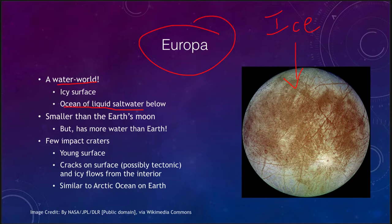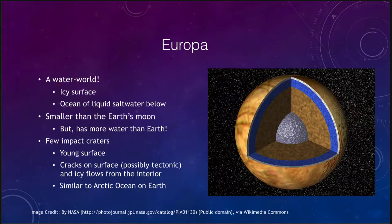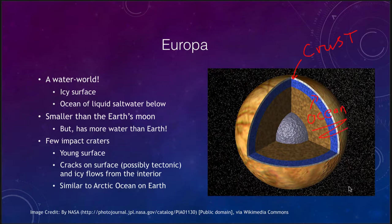Europa has below it an ocean of liquid salt water. Once we dig down through this ice, we find that there is actually liquid water below the surface. Looking at an interior sketch of the moon, we see the thick icy crust and then an ocean of liquid water well below the surface. That crust of ice is incredibly thick — it can be tens or hundreds of miles.